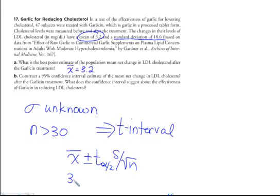Okay, so x bar in this case is 3.2. We'll come back to T in just a second. My standard deviation is 18.6, and my sample size is 47.